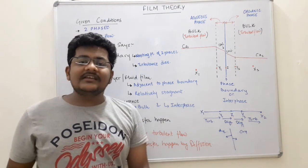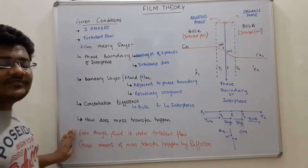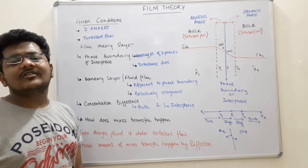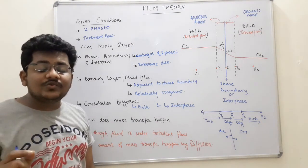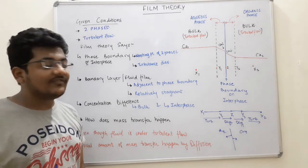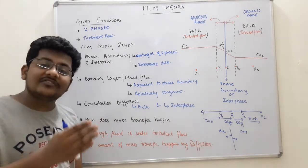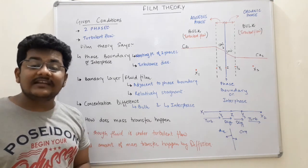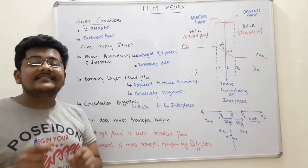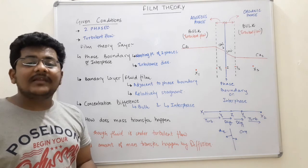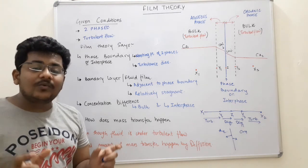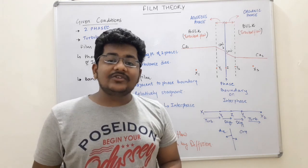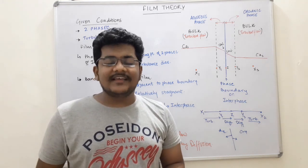In summary, this theory states that even though the fluid is under turbulent motion, a crucial amount of mass transfer happens by diffusion. This is because a phase boundary forms, and adjacent to it there is a relatively stagnant region where turbulence plays no role, making diffusion the only mechanism of mass transfer. In the next video we are going to talk about convective mass transfer. Thank you.